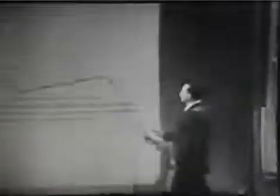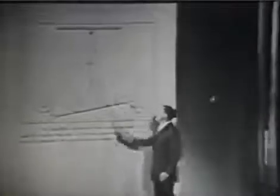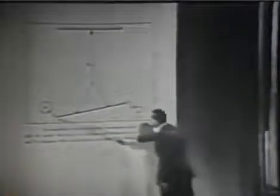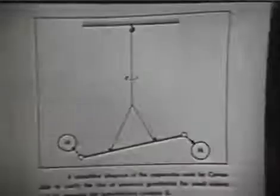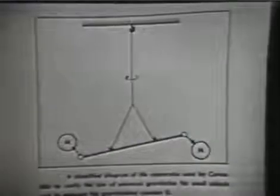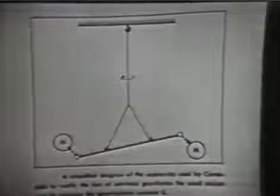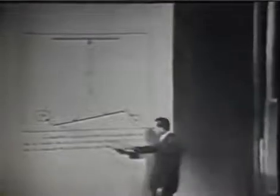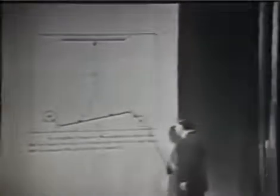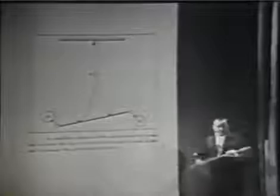The idea was to hang by a very, very fine quartz fiber a rod with two balls, and then put two large lead balls in the positions indicated here next to it on the side. Then, because of the attraction of the balls, there would be a slight twist of the fiber.